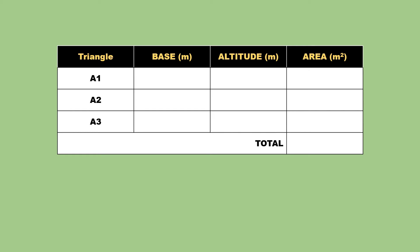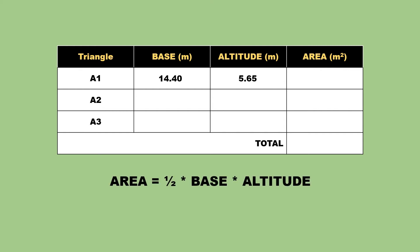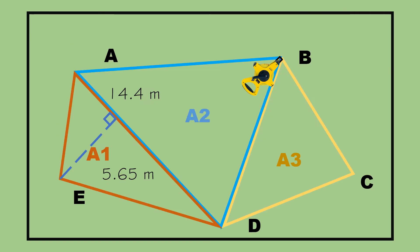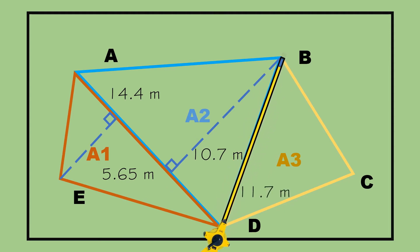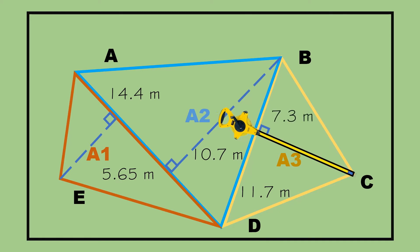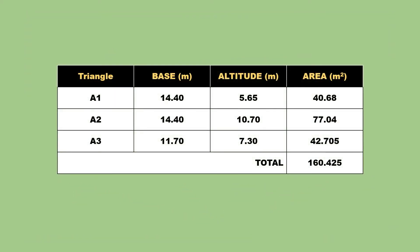Step 5: Record the length of the base and altitude on Table 3.1, Area Determination by Base and Altitude. To get the area of the triangle, divide the product of the base and altitude by 2. Step 6: Repeat steps 3 to 5 for the second and third triangles. To determine the area of the polygon, take the summation of the areas of the 3 triangles. A1 is 40.68 square meters, A2 is 77.4 square meters, and A3 is 42.705 square meters. Their total area is 160.425 square meters.